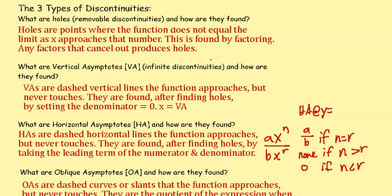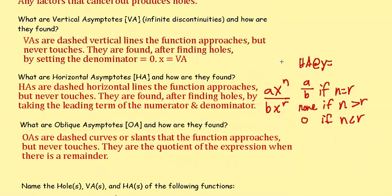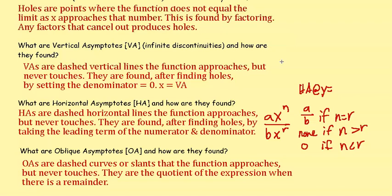What are vertical asymptotes, infinite discontinuities, and how are they found? Vertical asymptotes are dashed vertical lines that the function approaches but never touches. They are found after finding holes by setting the denominator equal to zero. X equals a vertical asymptote.